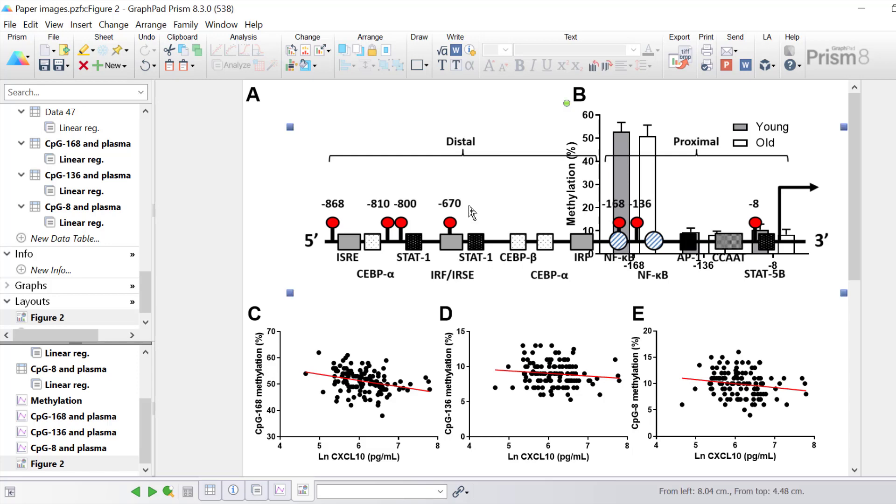Now you can see the schematic has been inserted into the layout page in Prism. If I click on the picture you'll notice that there are four blue squares in each corner of the picture. This is because the picture is classed as an object within Prism.